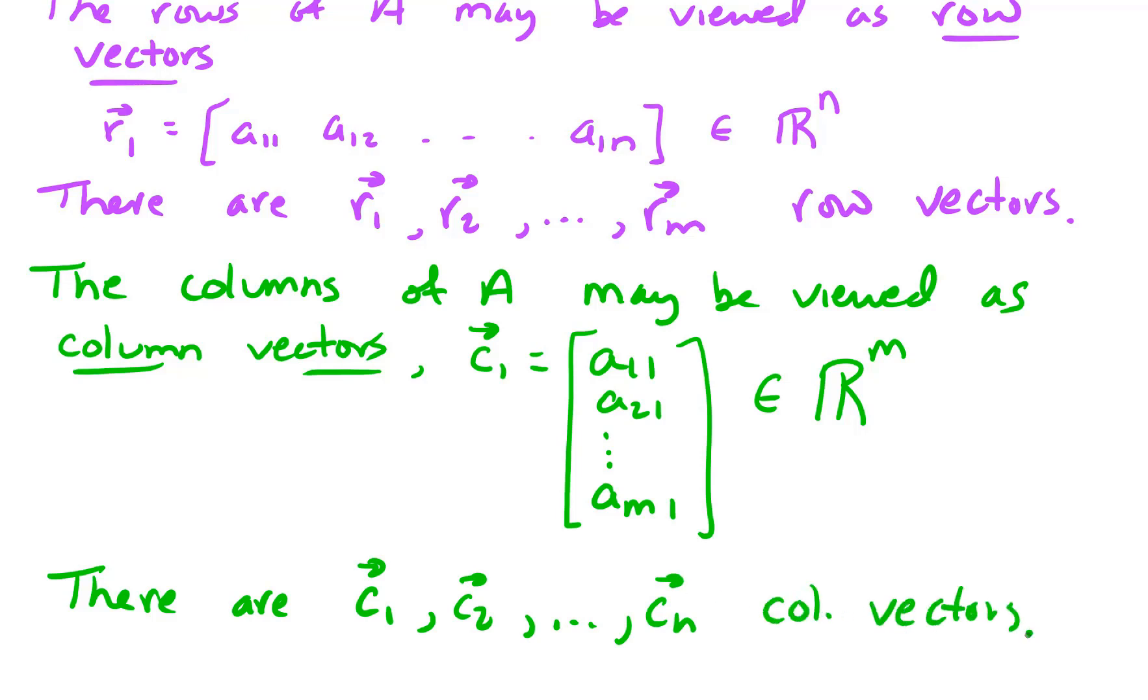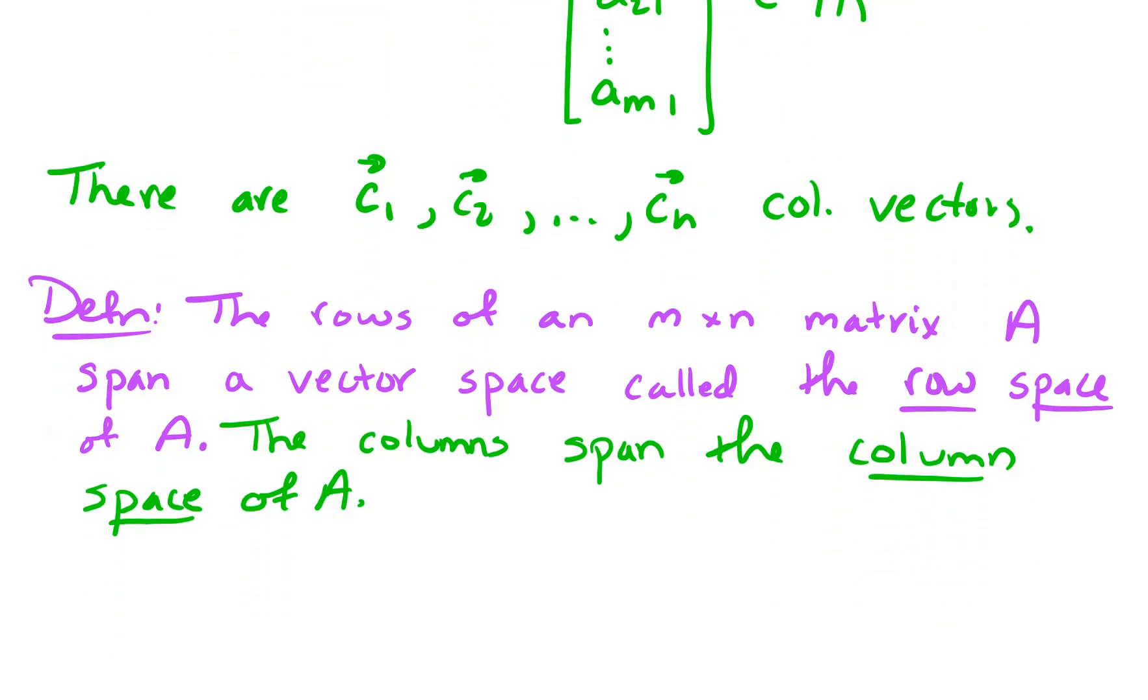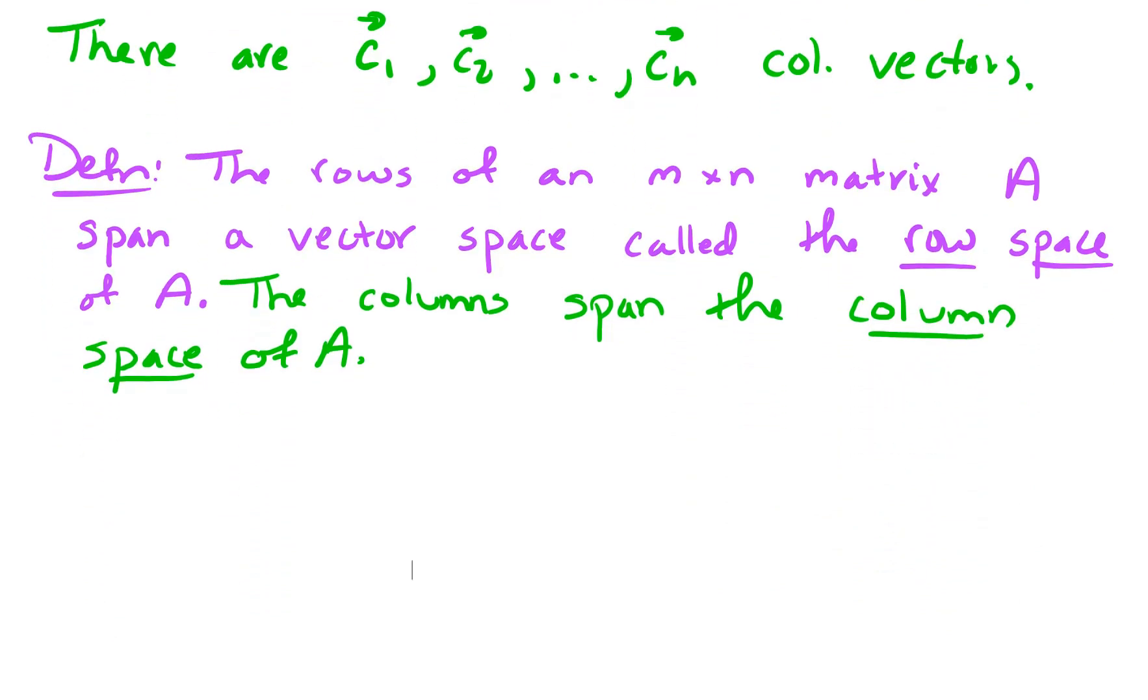So that's a little bit of terminology. We've got row vectors, and we've got column vectors. Now, what we want to be talking about is something called the row space and the column space. So let's have another definition here. The column space is a vector space, and let me stick with rows.